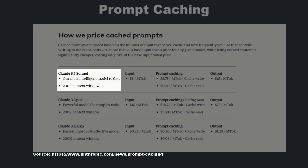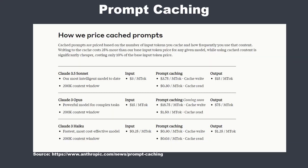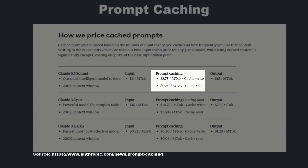Here is a more detailed example. For Claude 3.5 Sonnet — the most intelligent, up-to-date model with a 200k context window — the input cost is $3 per million tokens without prompt caching. With caching, the first write costs $3.75 per million tokens, but subsequent reads are only 30 cents per million tokens. The output price stays exactly the same.